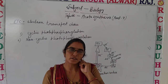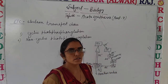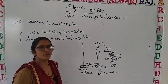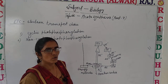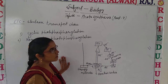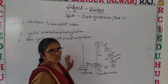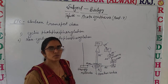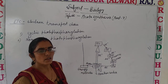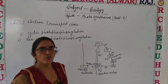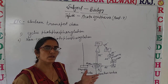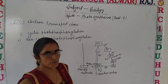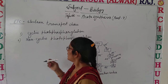Before this, we discussed about PS1 and PS2 — photosystem 1 and photosystem 2. We discussed the mechanism, their reaction centers, accessory pigments, and how they absorb energy in the form of photons and pass it on to the next electron acceptor. We discussed this in the light reaction.